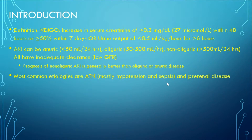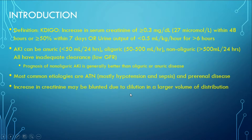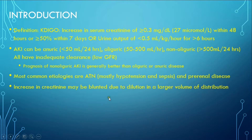The most common etiologies of AKI are acute tubular necrosis — mostly caused by hypotension and sepsis — and pre-renal disease. Both essentially involve a mismatch between oxygen and nutrient delivery and the cellular demand of the nephrons. The increase in creatinine could be blunted by intravascular dilution due to a larger volume of distribution — so if you give IV fluids, you may see improvement or flattening of creatinine, which could be from improved renal function or simply dilution of the creatinine.